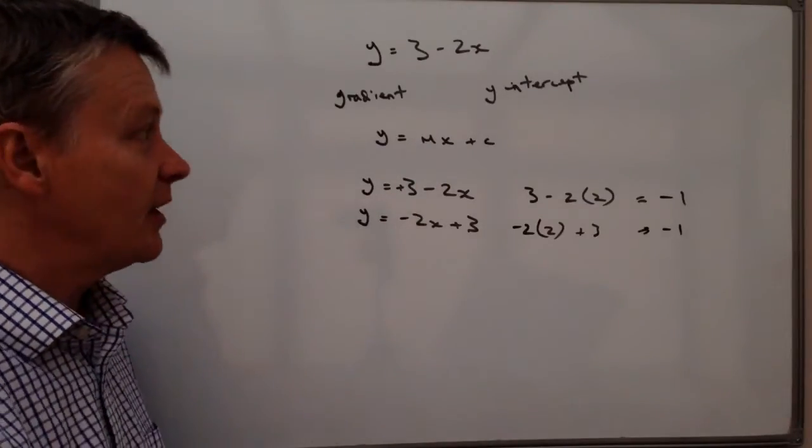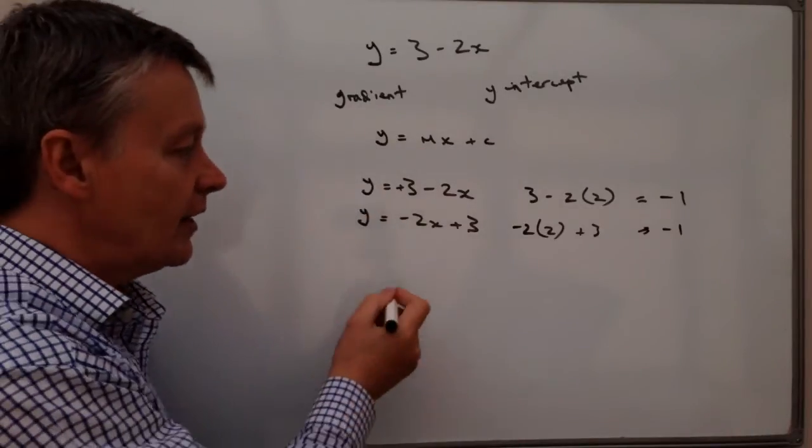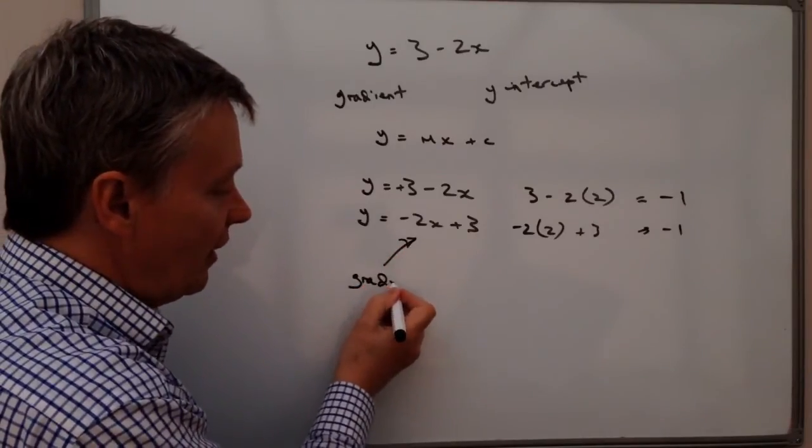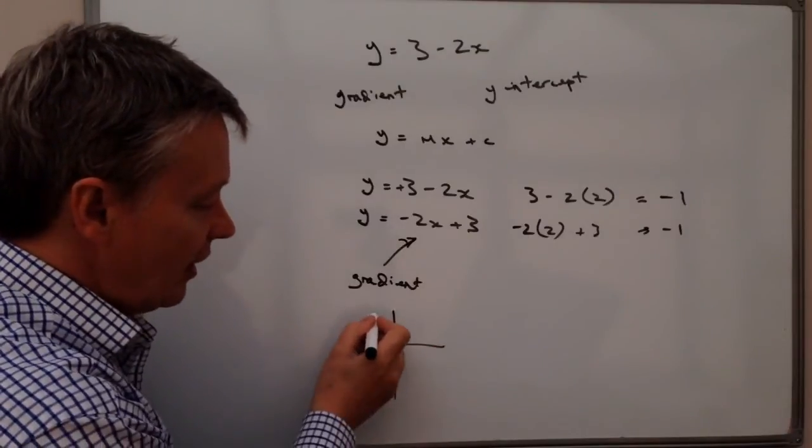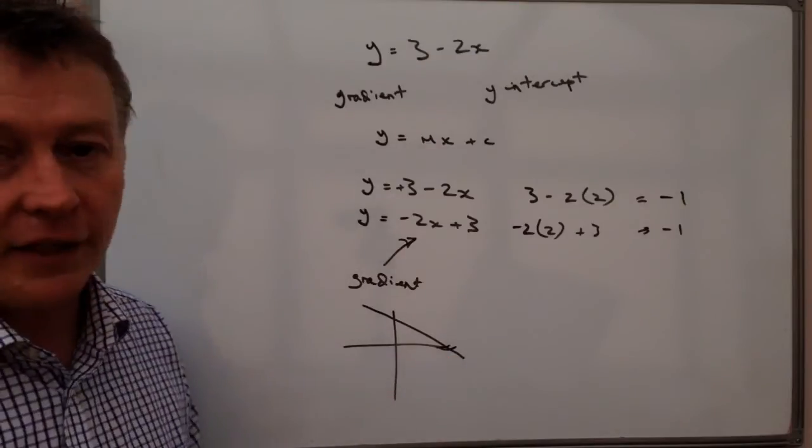But it gives me that ability now to be able to answer this question because if I want to write down the gradient, the gradient is minus two. This is this bit here. So in other words, if I have a look at a sketch of it, it's actually going to go this way. It's a minus gradient.